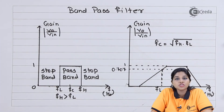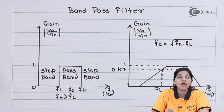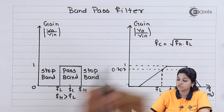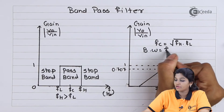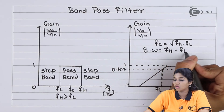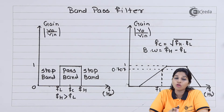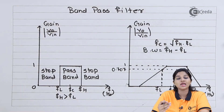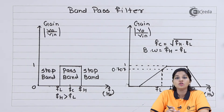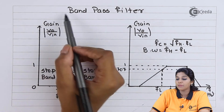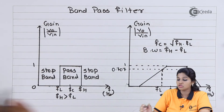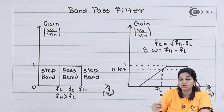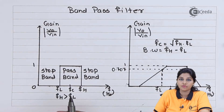With the help of fh and fl, we can also calculate the bandwidth of the band pass filter, which is given by the difference between the higher frequency fh minus the lower frequency fl. We always need to consider the frequency as the 3 dB down frequency. Basically, the band pass filter passes a particular band of frequency in the range of fl to fh, with fh always greater than fl.